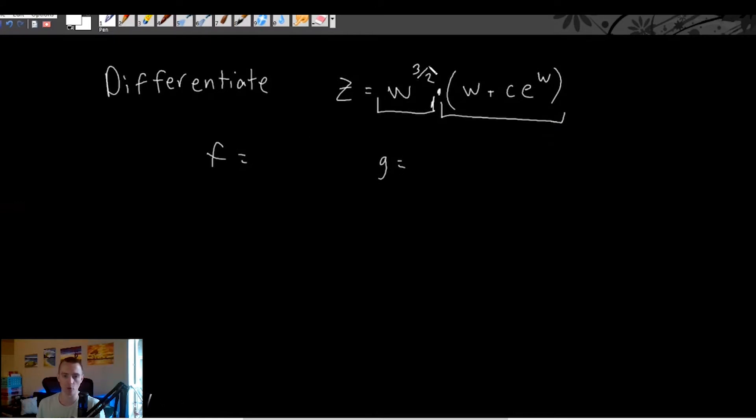So basically, as long as we're calling either f or g, w to the two thirds, or to the three halves I'm sorry, and the other being w plus ce to the w, we should be good. So we can just say w to the three halves here, and w plus ce to the w.